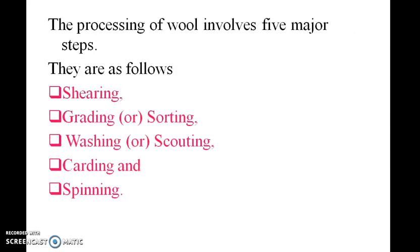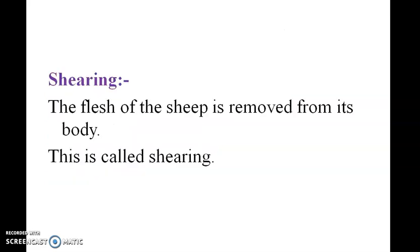The processing of wool involves five major steps: shearing, grading, sorting, washing, carding, and spinning. In shearing, the fleece of the sheep is removed from its body. In grading and sorting, the fleece from the same sheep may differ from different parts of the body, so the wool is sorted accordingly.